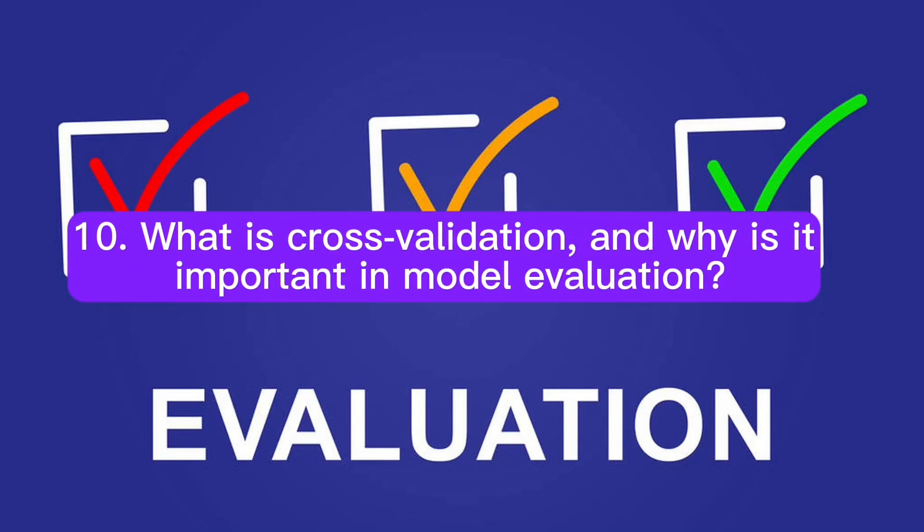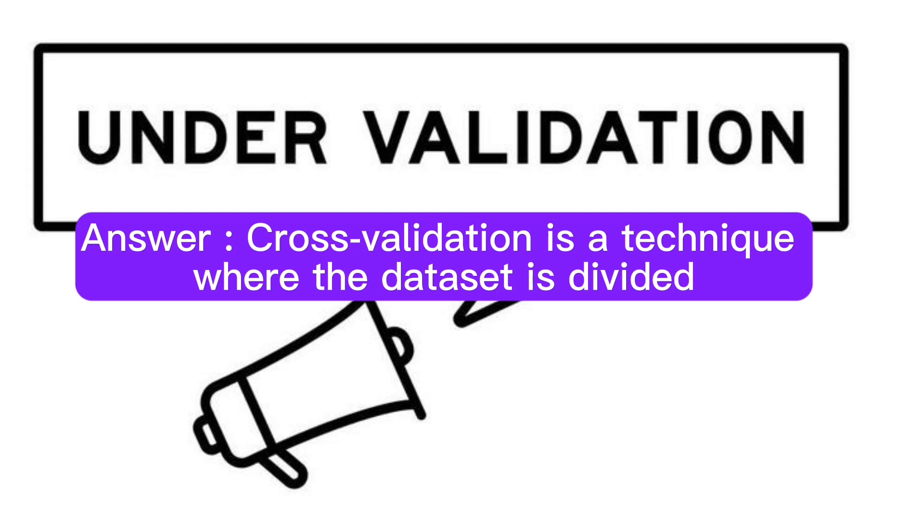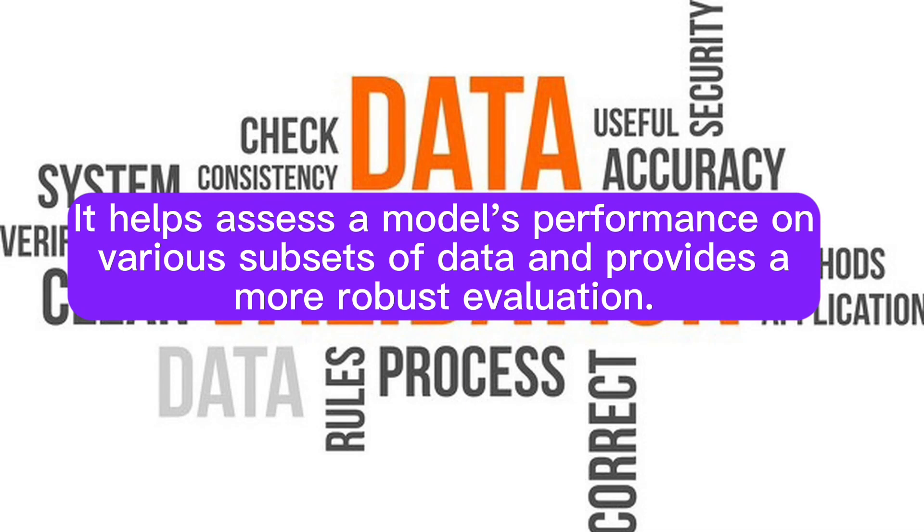Question 10: What is cross-validation and why is it important in model evaluation? Answer: Cross-validation is a technique where the dataset is divided into multiple subsets (folds) to train and evaluate a model multiple times. It helps assess a model's performance on various subsets of data and provides a more robust evaluation.